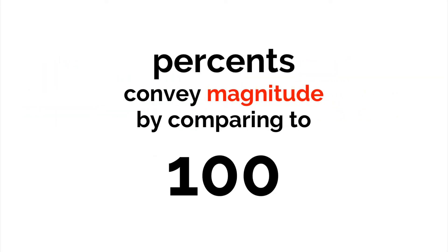It's just a way of conveying magnitude by modifying some total into 100, and then reporting a value of interest as some fraction of that 100.